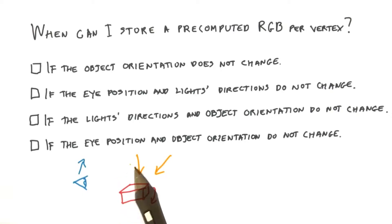There are three elements that can change in the scene: the light's directions, the eye's position, and the object's orientation.